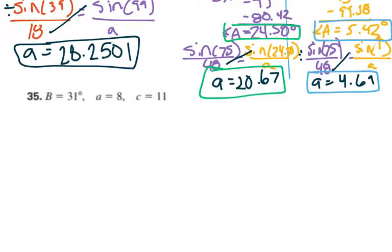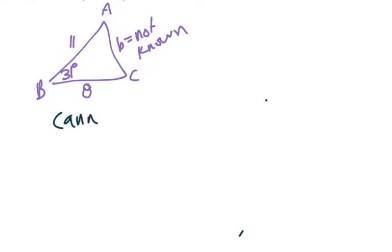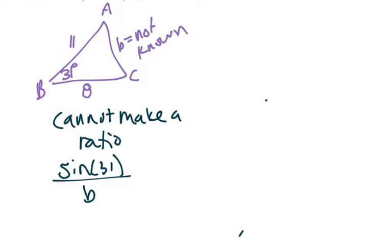And then the last one here is not going to have a lot of work because it turns out that this one can't actually be solved with law of sines. Why? Because if you have angle B, you need side B, otherwise you can't make a proportion. And we only have angle B is 31 degrees and not knowing the side B, but knowing side A is 8 and side C is 11. But because it's not known, we cannot make a ratio of all numbers. Sine of 31 over B is not helpful.